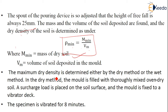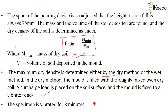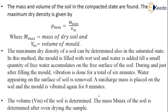The maximum dry density is determined either by dry method or by wet method. In the dry method, the mold is filled with thoroughly mixed oven-dry soil. A surcharge load is placed on the soil surface and the mold is fixed to a vibrating device. The specimen is vibrated for about 8 minutes, after which ρmax is calculated.